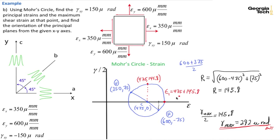And then rounded to 3 significant figures, that gives me 621 mu millimeters per millimeter. And my other principal strain is going to be 475 minus the radius of 145.8, and so that's going to equal 329 mu millimeters per millimeter.